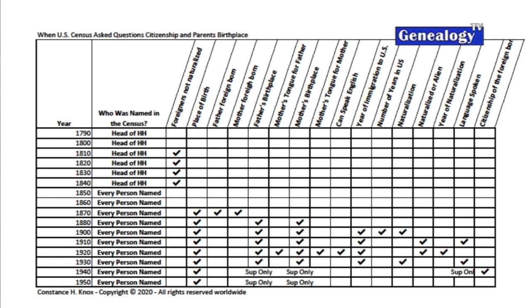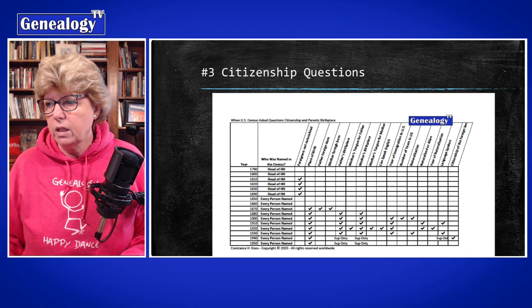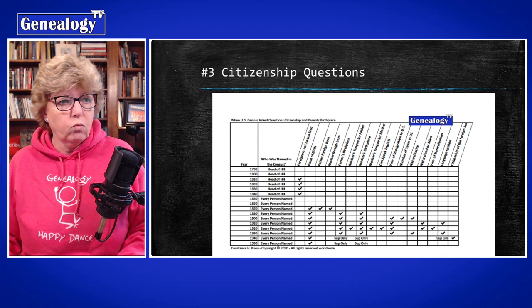When we get to 1940, those citizenship questions are only in the supplemental questions — only two lines per page. In 1950, it will be on several more lines on the page, and it's my understanding the 1950 census will be the last time they ask about citizenship questions. I'll make this chart available through a link in the newsletter and at genealogytv.org.